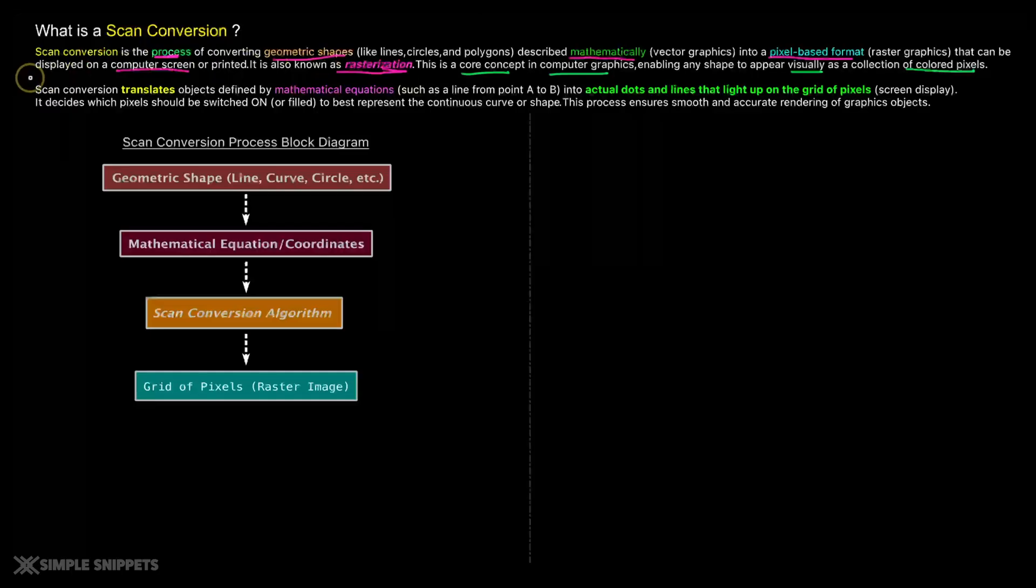You can also describe it in another way which is the second line which says scan conversion basically translates objects defined by mathematical equations again lines, circles, polygons, rectangles, triangles or for example a line from a point A to B into actual dots and lines that light up the grid of pixel. So what is the basic building block when it comes to your digital screen? It is pixels. We've already discussed this in first video itself. So that is the smallest element on a screen display.